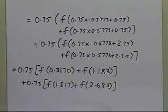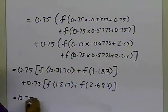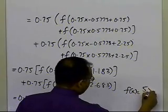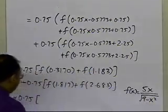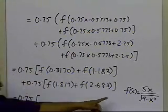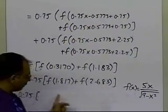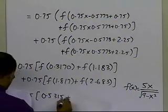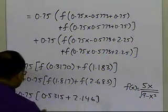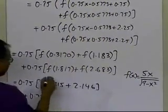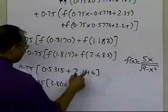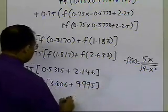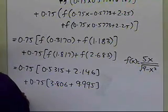So once we have that, we just need to substitute the values of the function at those points. I'm going to directly put those. You already know what the function is. The function f(x) is simply 5x divided by square root of 9 minus x squared. So all I'm writing down here when I'm going to write down the values of the function is simply substituting the values of these arguments in this function to get the values of the function. And these turn out to be 0.5315, the next one turns out to be 2.146, the value of the function at 1.817 turns out to be 3.806, the value of the function at 2.683 turns out to be 9.995, and the value which I get is 12.36.